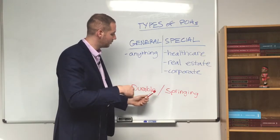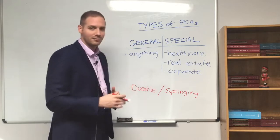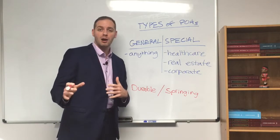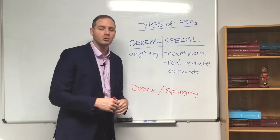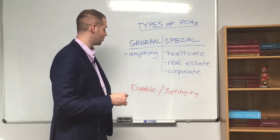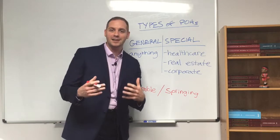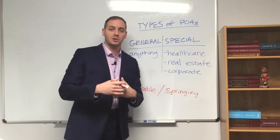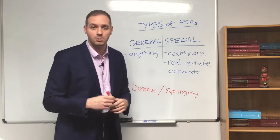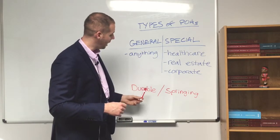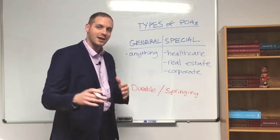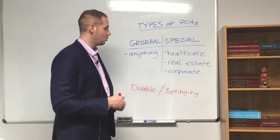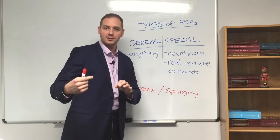I'd also like to turn our attention to durable and springing. I hear this a lot — financial advisors will use what I call common law language and say, 'Zach, I need a durable power of attorney.' We don't actually use that language in Louisiana, though that concept is included in the general power of attorney. Durable just means it lasts indefinitely. So if you had a power of attorney over your mother and a physician certified she no longer had capacity to make decisions, you would have a general power of attorney that is durable — meaning it lasts until her death — as opposed to a springing power of attorney, which springs into effect upon a certain event or occurrence.